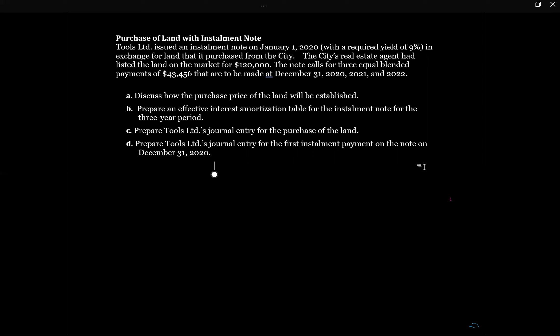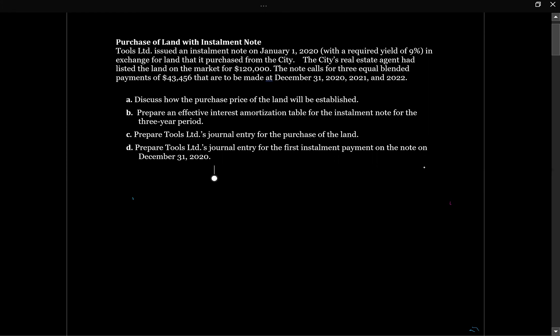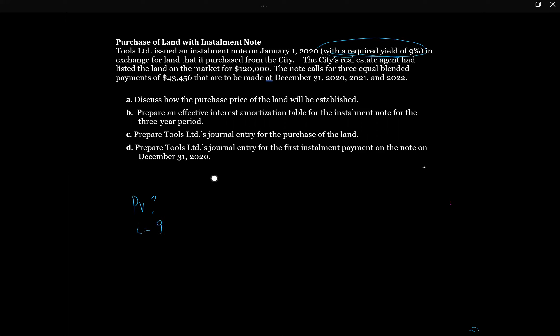Let's bring out our financial calculators and calculate the present value of the land. We don't know the present value — that's what we need to find. The interest rate is going to be the market yield, the required yield of 9%, so I equals 9%. The number of periods is three because payments are made annually over 2020, 2021, and 2022.